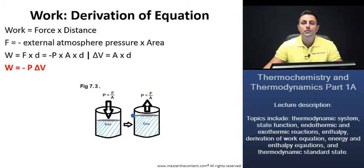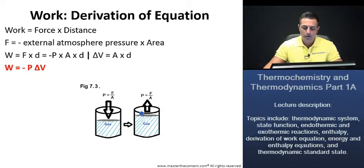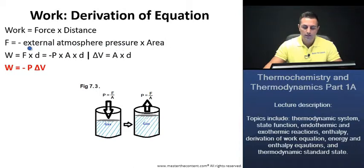That change in position is against the atmospheric pressure. And when it's against the atmospheric pressure, if we come back up to our equation, that's why it's negative. Thus, force is also equal to the negative sign — it is the product of the external atmospheric pressure, and that's why it's negative — times the area of that piston.